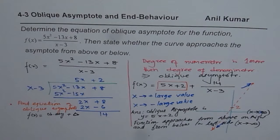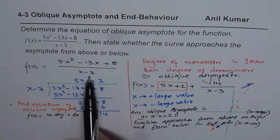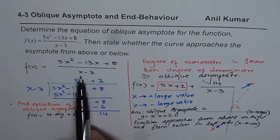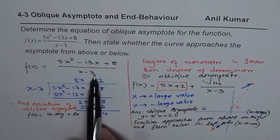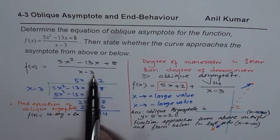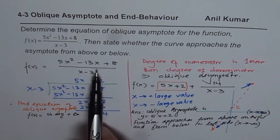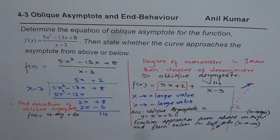That is how we determine the behavior of the curve near the oblique asymptote. Note that we are not analyzing the vertical asymptote in this video — you can do that on your own. The vertical asymptote exists at x equals 3, and you can determine whether the function approaches positive or negative infinity from each side as an exercise. Thank you and all the best.